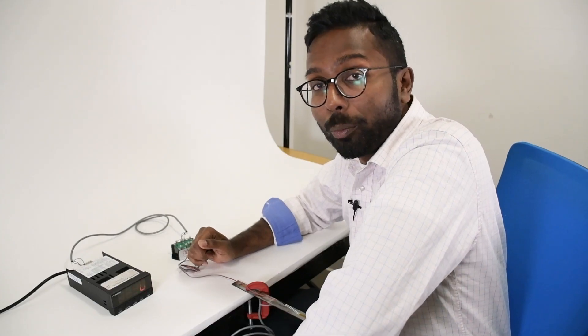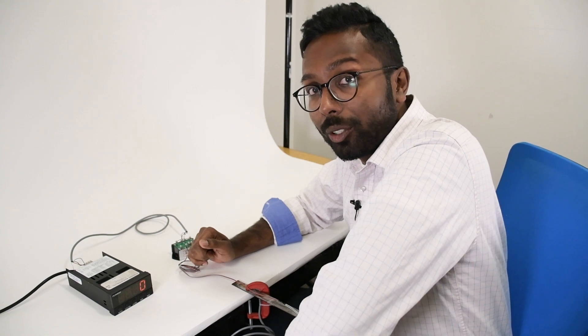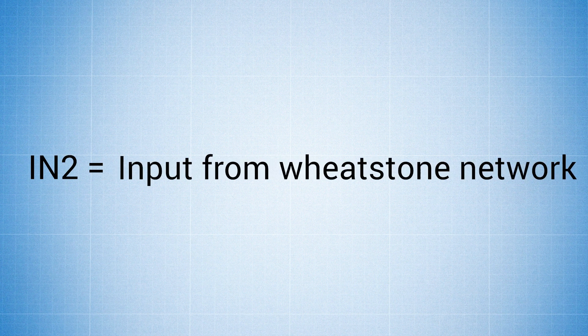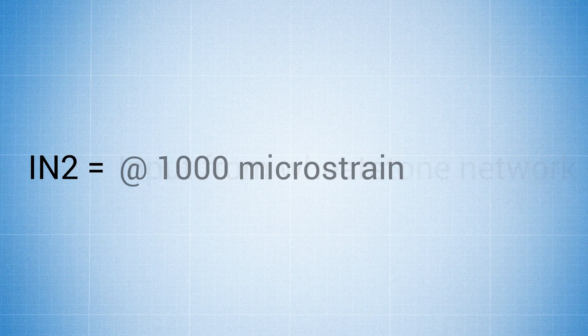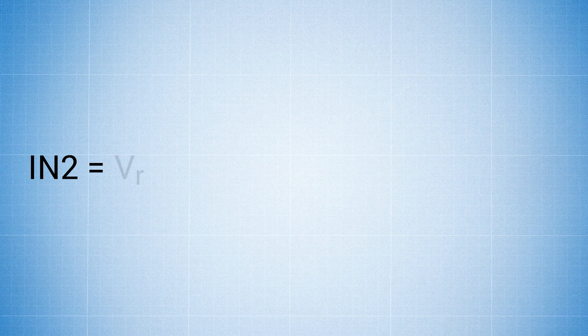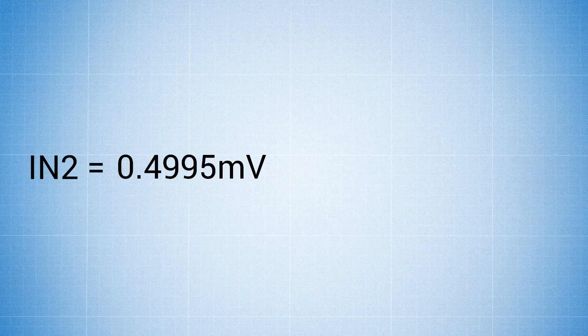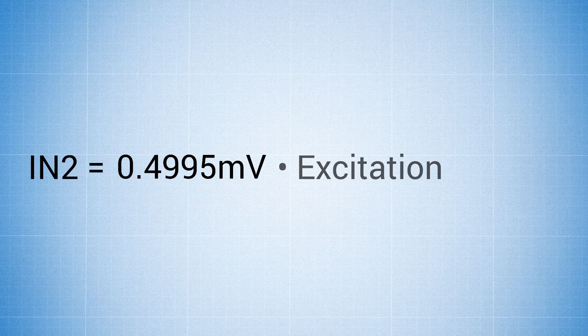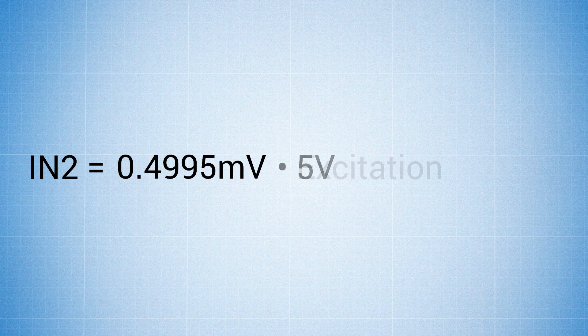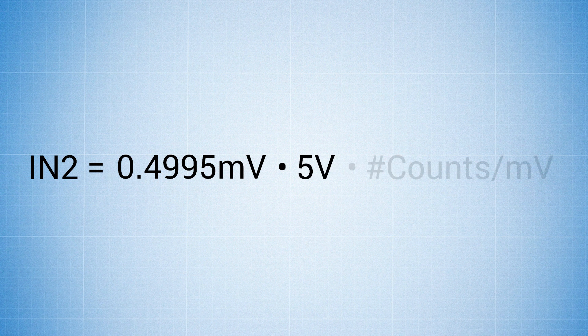Here's where we'll be using the 0.4995 sensitivity value that we calculated in the previous calculations. Now we have IN2, which is basically the input coming from the Wheatstone network when we have a microstrain of 1000. At 1000 microstrain, we compute the IN2 value. We take the Vr, which is 0.4995, multiply that with the excitation voltage that we give to the Wheatstone network. In this case, that is 5 volts.